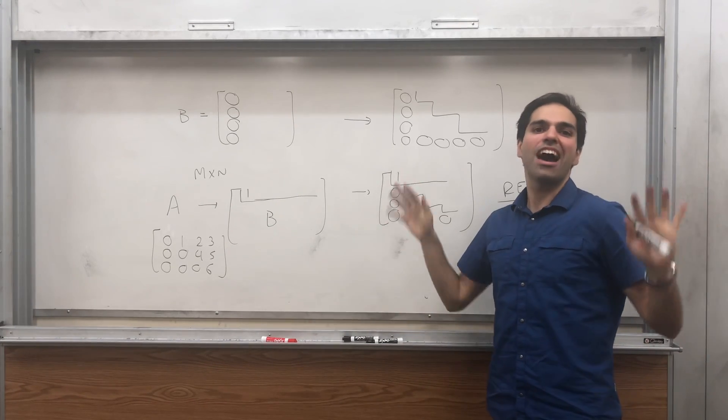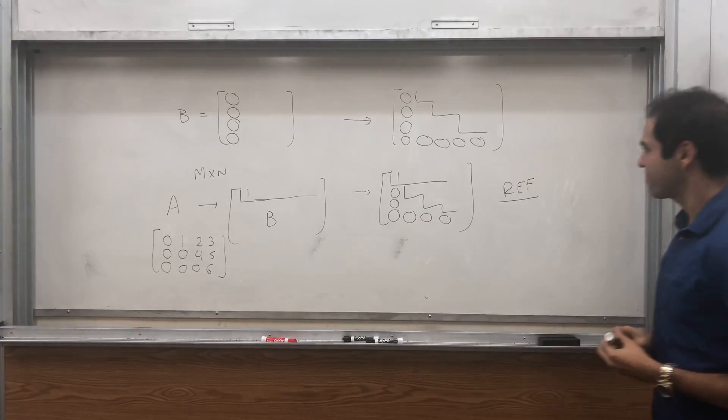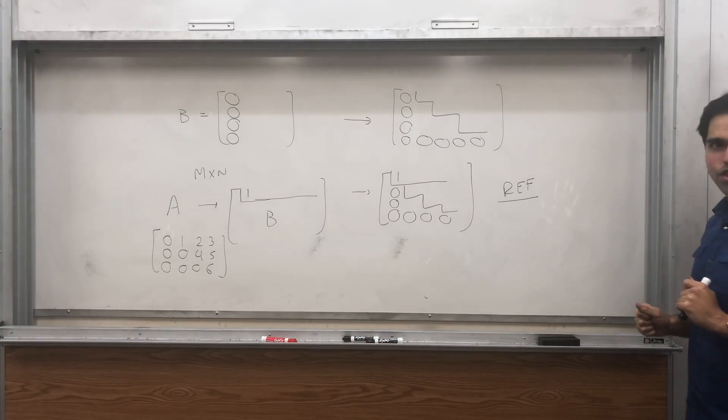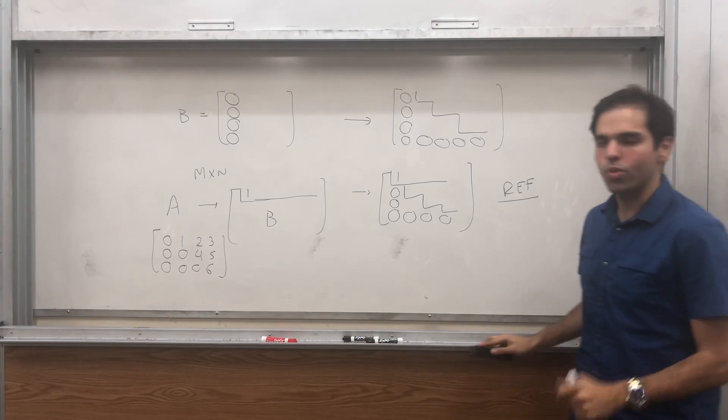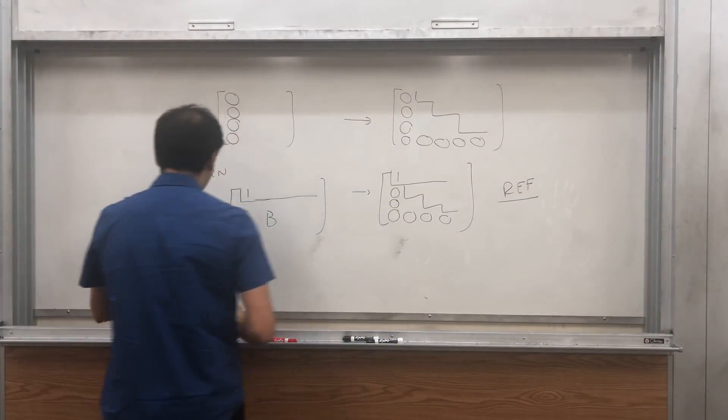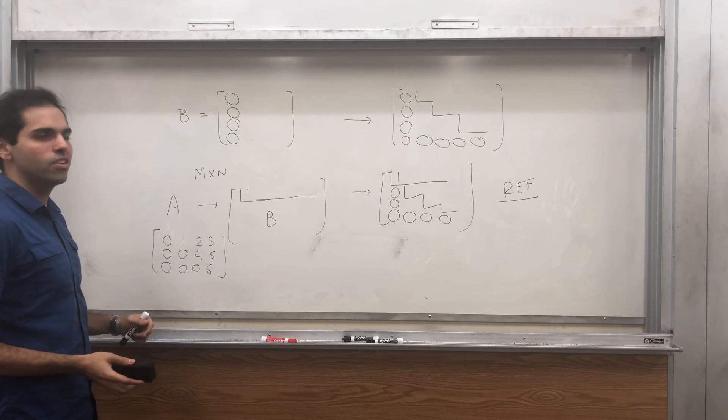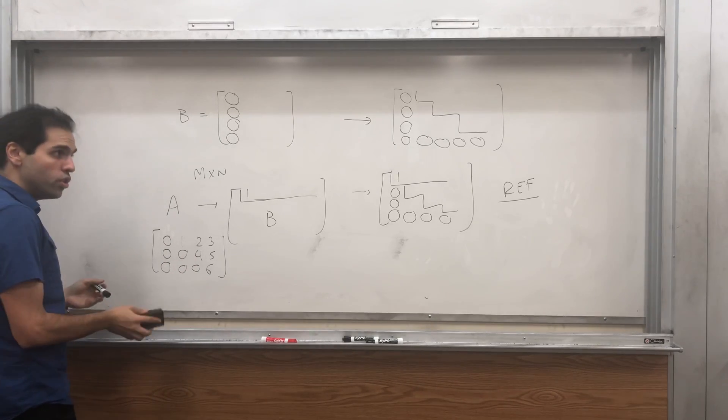So now you can just do Gauss-Jordan in peace. So this is row echelon form, and you might ask, what about reduced row echelon form? For example, this is in row echelon form, but not reduced.